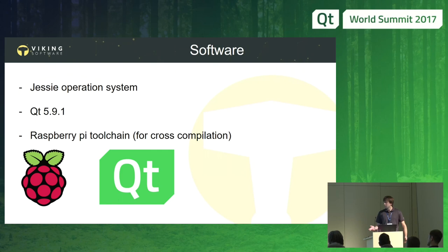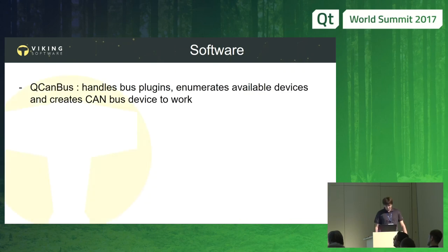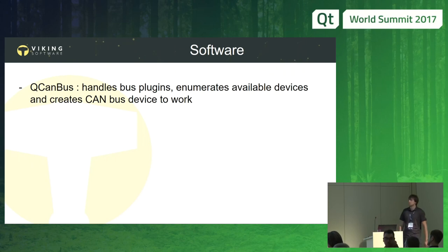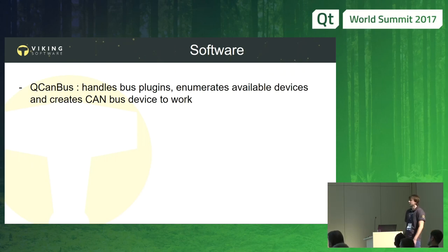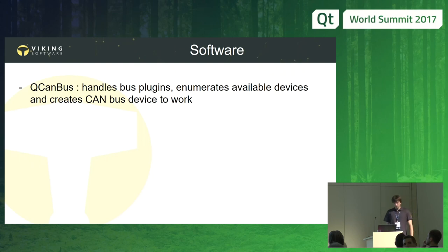When our software environment is ready, we can start application development. First of all, we need to include the serial bus module in our project to include the headers and libraries that contain CAN bus support. Qt offers a few main classes. The first is QCanBus — it handles CAN plugins, enumerates devices, and provides the ability to create a device to work with.